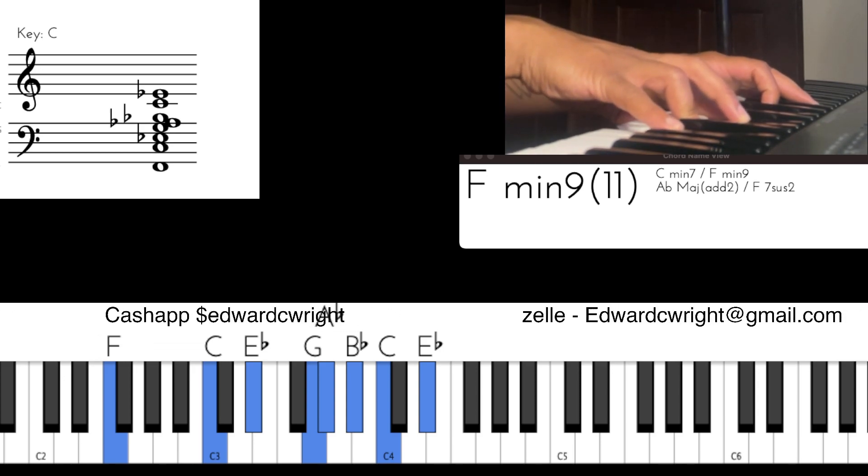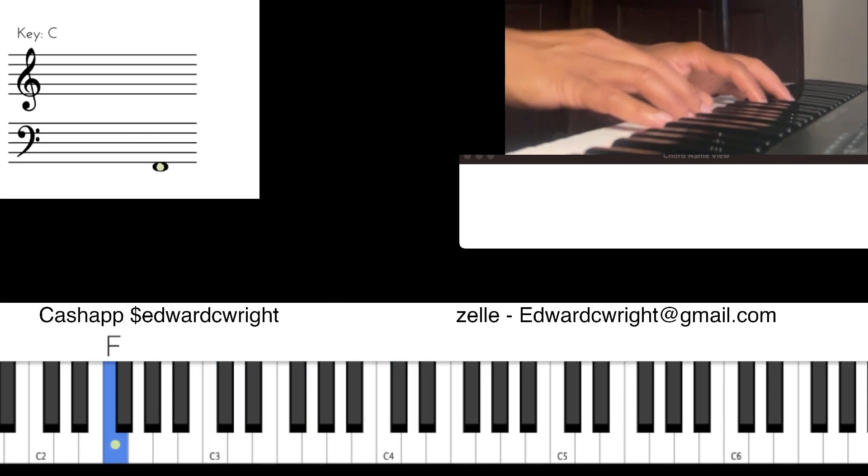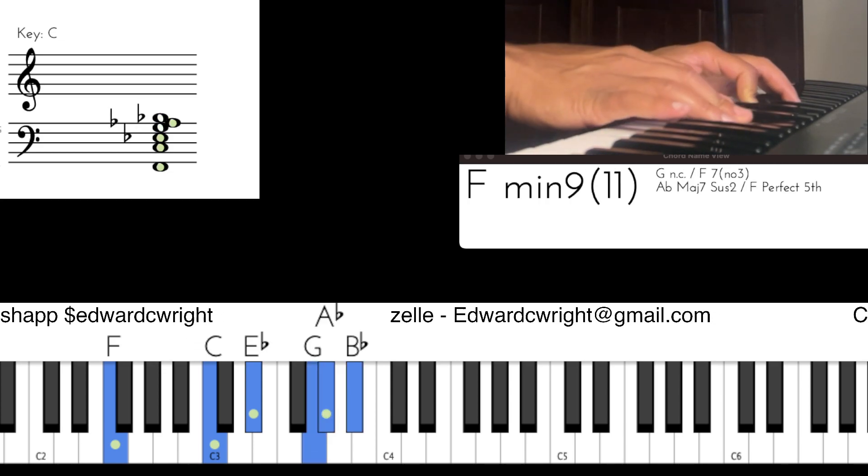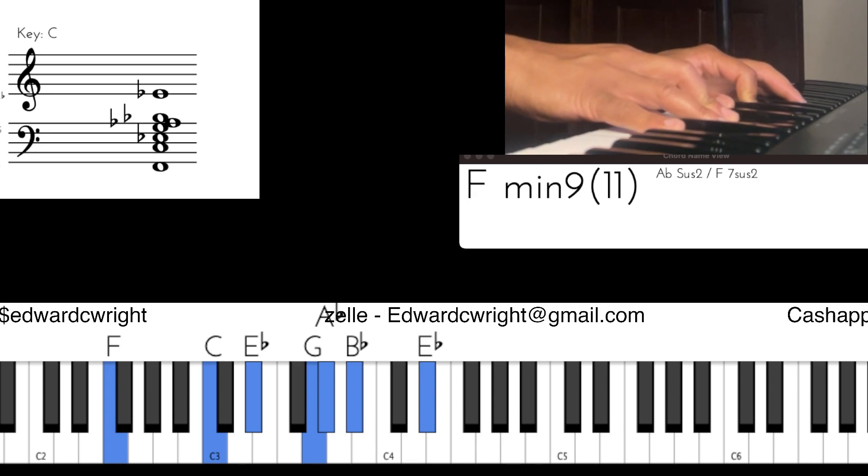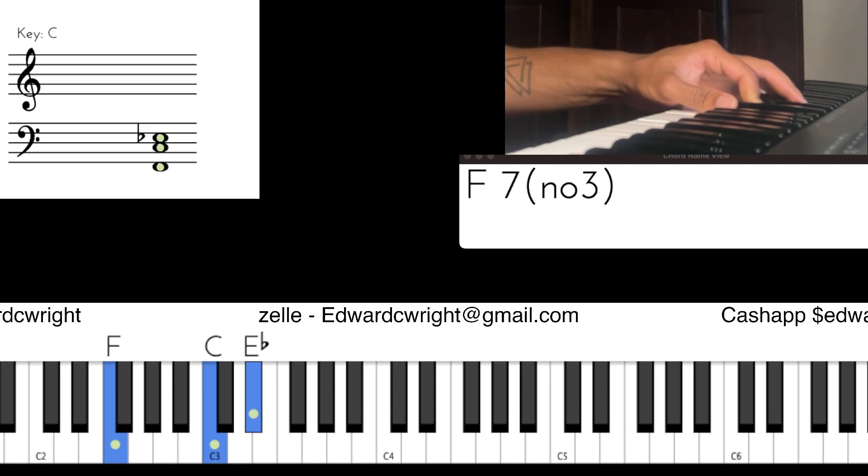All right, so the four of C is F. Go to the minor nine eleven. Now how do we get that? We have the one, five, flat seven to the nine, flat three, four, and flat seven. See it? Left hand, we have the one, five, and flat seven of F.